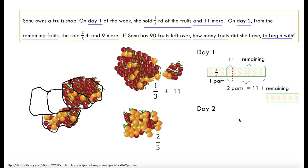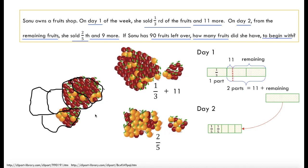On day 2, she has to use whatever is remaining — she cannot use the original whole set. Whatever is remaining from day 1, she makes use of that. She sold two fifths, where the remaining is divided into 5 equal parts which is the denominator, and 2 parts are sold. She also sold 9 more in addition to the two fifths, so we add plus 9.